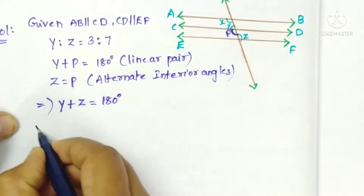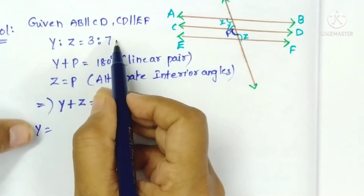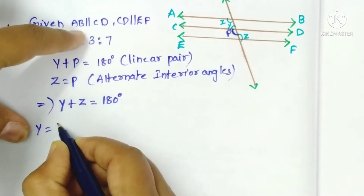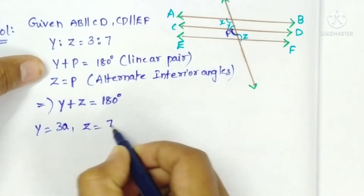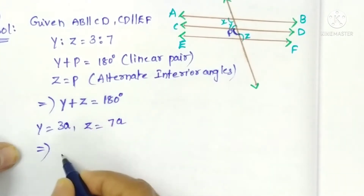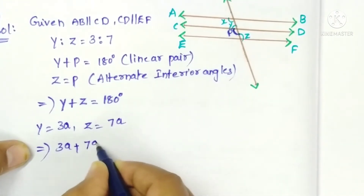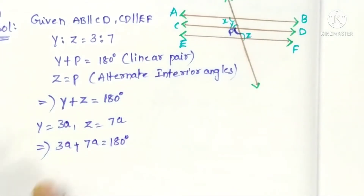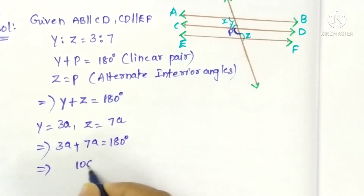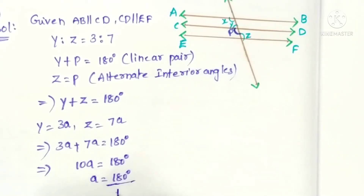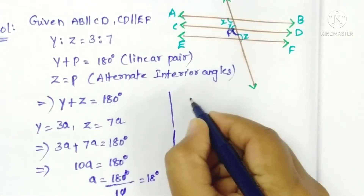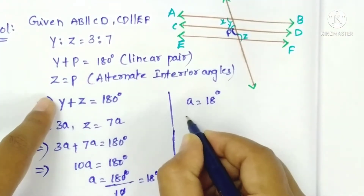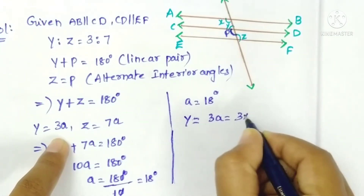We have y to z equals 3 to 7, so let y equal 3a and z equal 7a. Substituting: 3a plus 7a equals 180 degrees, so 10a equals 180 degrees, giving a equals 18 degrees.